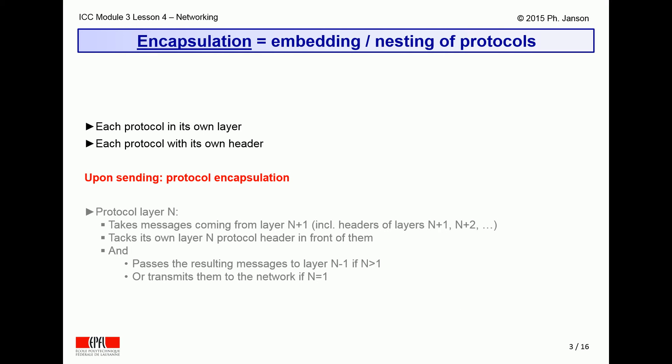On the sending side, protocol layer N takes any message coming from protocol layer N+1, including its own N+1 header, and tacks in front of it the layer N header before passing the resulting message down to layer N-1, or across the physical layer connection if N equals 1.